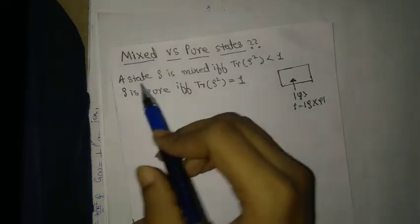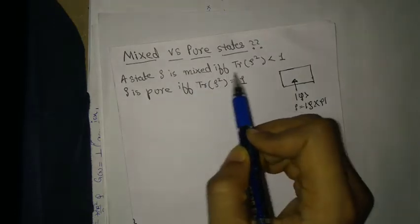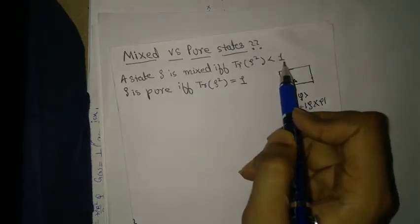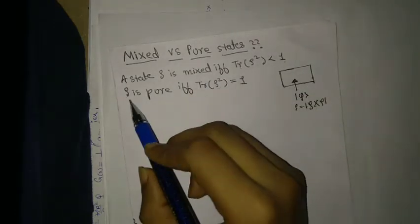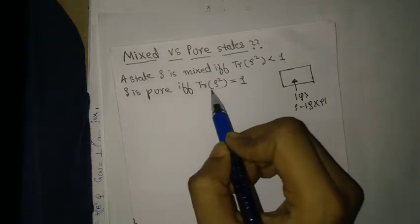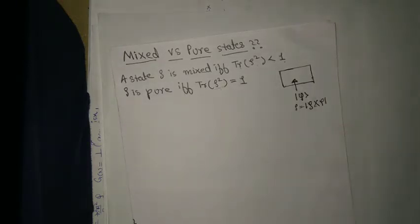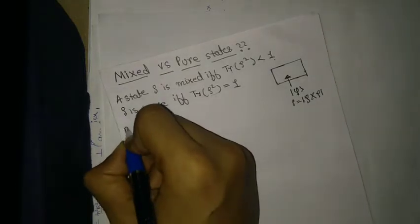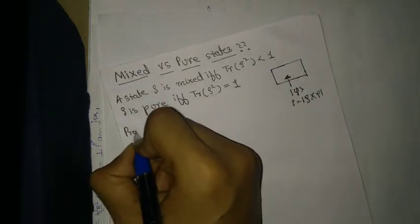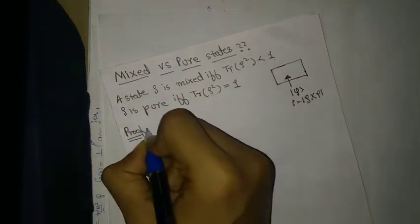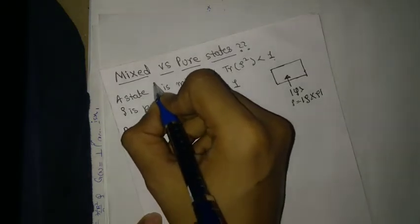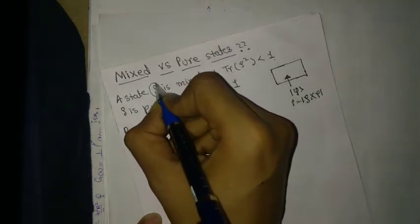We will look at the proof of this. A state ρ is mixed if and only if Tr(ρ²) < 1, and ρ is pure if and only if Tr(ρ²) = 1. So let's see the proof — how to proceed.